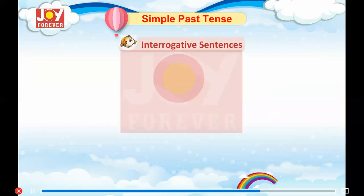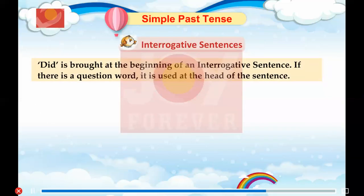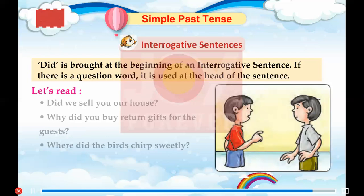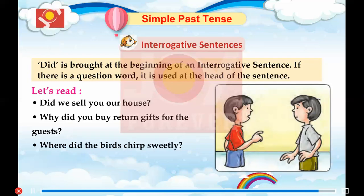Interrogative Sentences. 'Did' is brought at the beginning of an interrogative sentence. If there is a question word, it is used at the head of the sentence. Let's read. Did you pay the electricity bill on time? Did my mother cook a new dish yesterday? Did I go to the zoo last week? Did we sell you our house? Why did you buy return gifts for the guests? Where did the birds chirp sweetly?